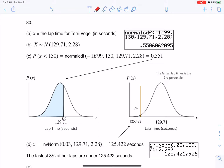She averaged 129.71 seconds per lap and had a standard deviation of 2.28. So my variable here is the lap time for Terry,